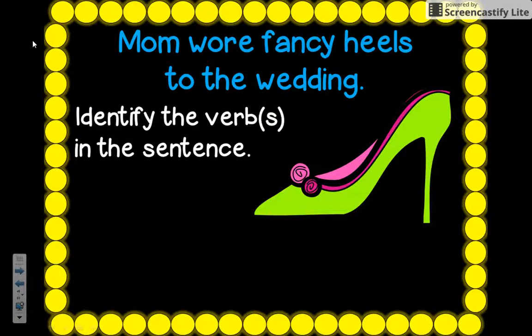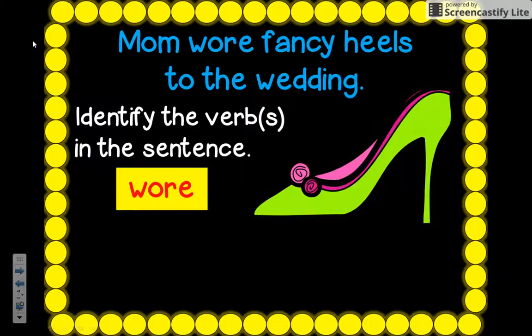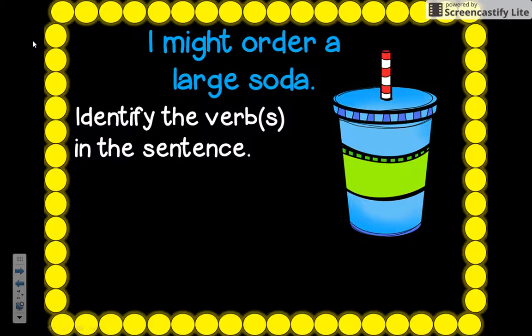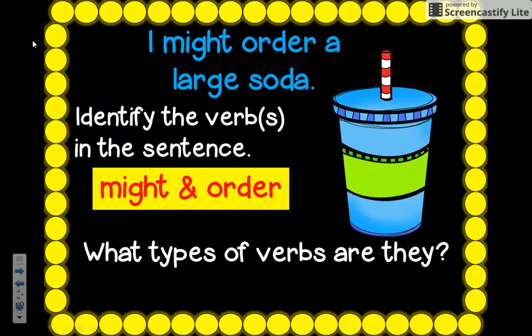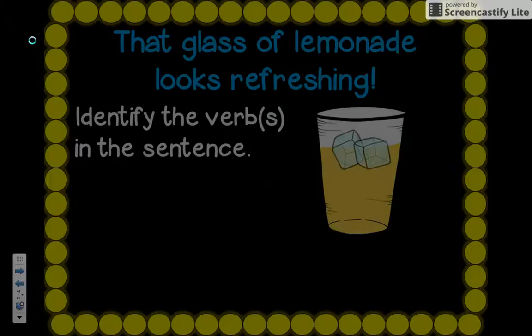'Mom wore fancy heels to the wedding.' Can I see a word that shows action? Yes, I can see somebody wear something. So 'wore' is our action verb. 'I might order a large soda.' I'm looking for a word that shows action first — I can see someone order something, so 'order' is an action verb. I look at the word next to it: does 'might' help 'order'? It does — it's on my list. So 'might' is a helping verb and 'order' is an action verb.